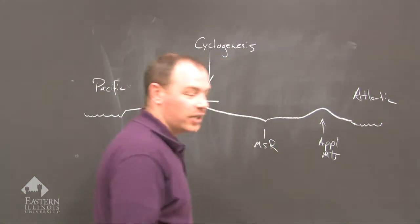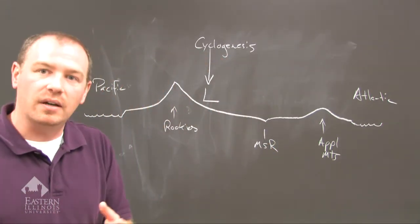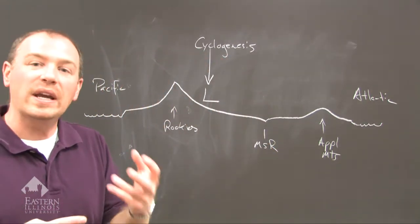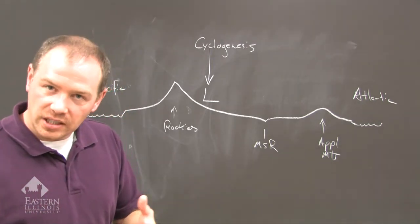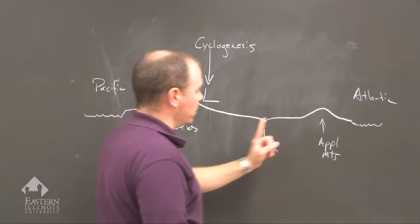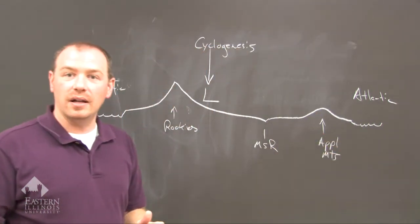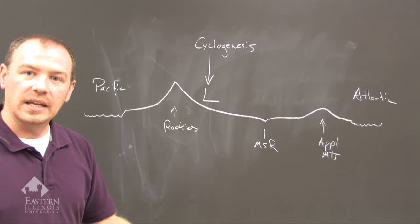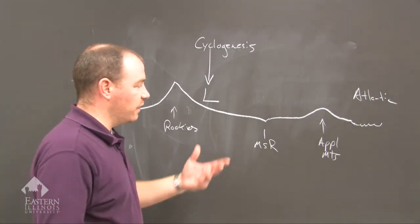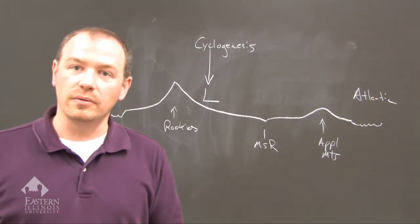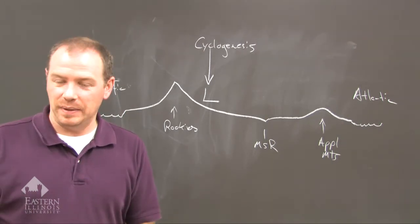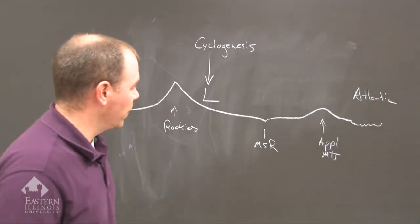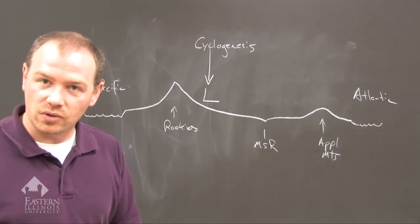Once it hits the Appalachian Mountains, there's a bit of a weakness to its development, so it will weaken and dissipate a little bit. But then once it goes past the Appalachian Mountains, it redevelops and intensifies again. And if you're in the New England area or the New York-Boston area, sometimes we refer to these redeveloping systems as nor'easters - very gusty wind-storm systems.